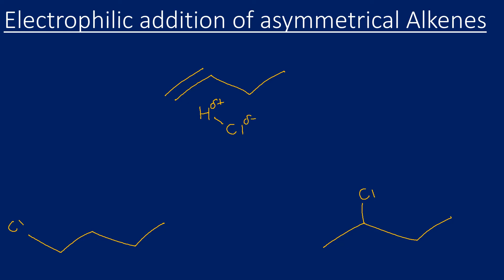The mechanism will be explained in more detail in the next video, but I'll go through it quickly here. The first step: the pi bond attacks the electrophile. This is where we get two possible structures — the hydrogen could bond to either the left or the right carbon. If the hydrogen bonds to the carbon on the left, the carbon on the right ends up as the carbocation. If the hydrogen bonds to the carbon on the right, the carbocation is on the first carbon.